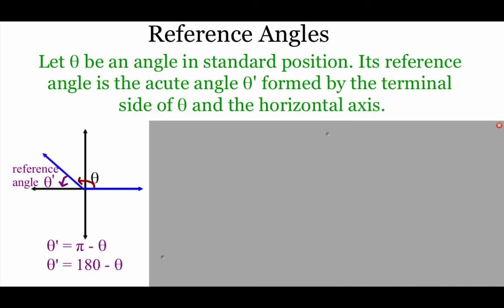The last topic in this video is reference angles. We let theta be an angle in standard position, and its reference angle, called theta prime, is the small acute angle formed between the terminal side of theta and the closest horizontal axis. There are three ways to find these depending on where the angle is located.